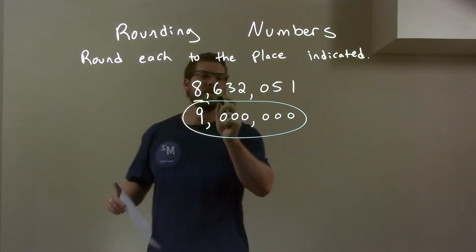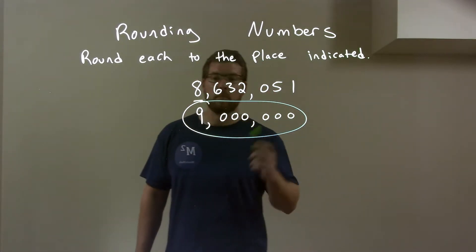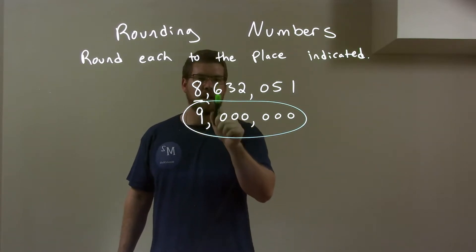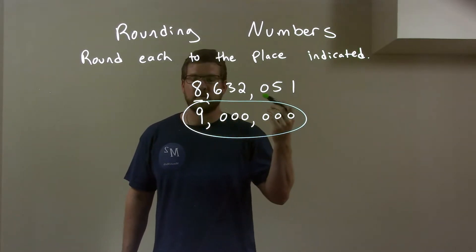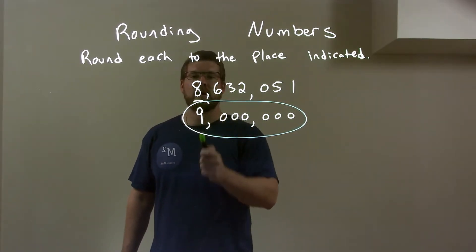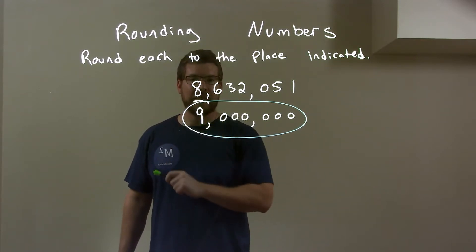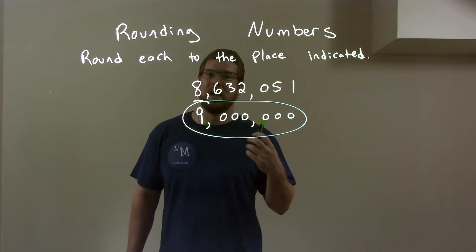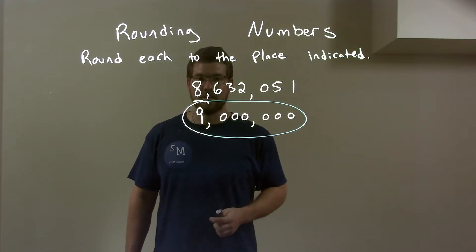So quick recap. We're given 8, 6, 3, 2, 0, 5, 1. And we're rounding on that 8. So we look to the right. We have a 6 right there. 6 is 5 and up, causes the 8 to round upwards, so the 8 becomes a 9. Then the rest is 0, so we have 9 with 6 zeros or 9 million, and that is our final answer.